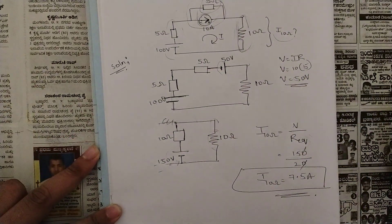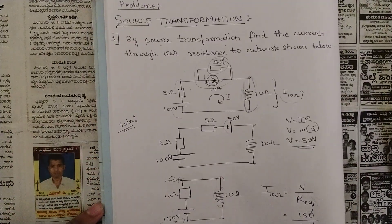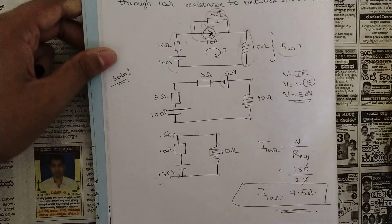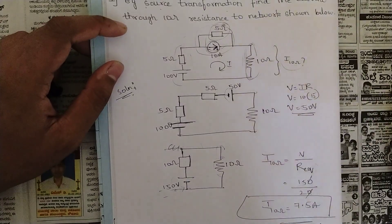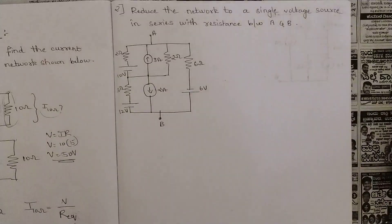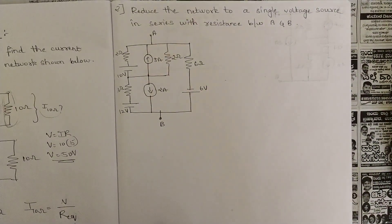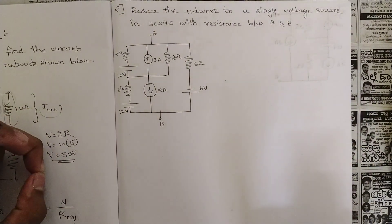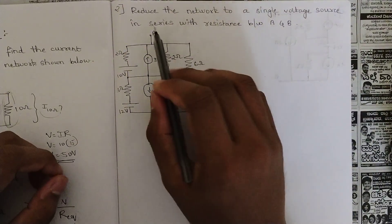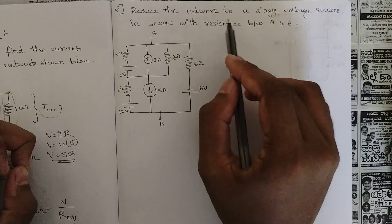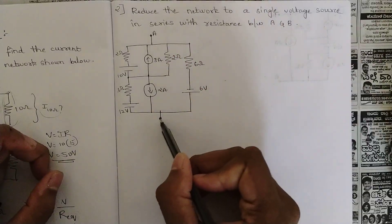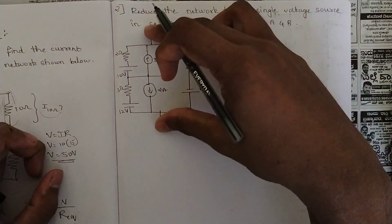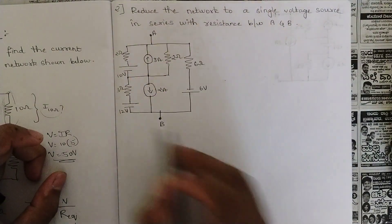Take note of this question — it is very easy but very important. The upcoming problems won't be this easy. Let's move to the second question. The question asks: reduce the network to a single voltage source in series with a resistance between terminals A and B.